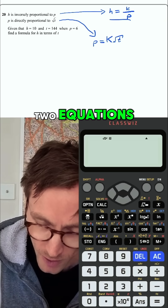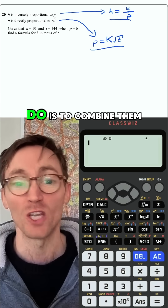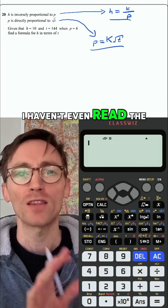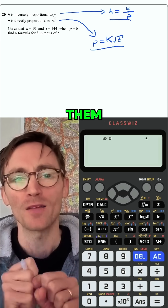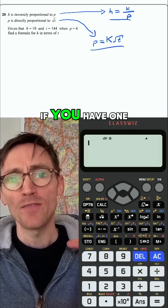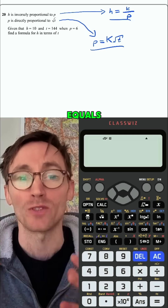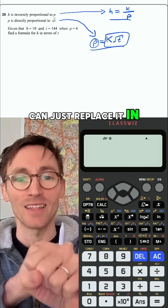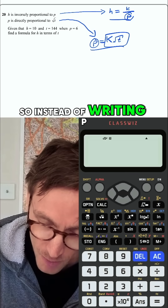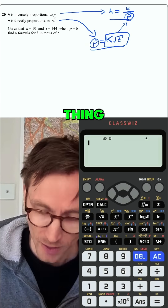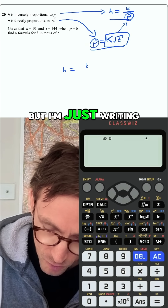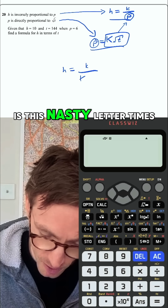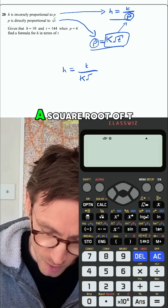Now that you've got these two equations, the only thing you can do is combine them. You're going to combine them in some way — I haven't even read the question yet. Basically, if you have one letter equal to something, like p equals this, you can just replace it in the other equation. So instead of writing p, I'm swapping it out for what p actually equals: this constant times the square root of t.